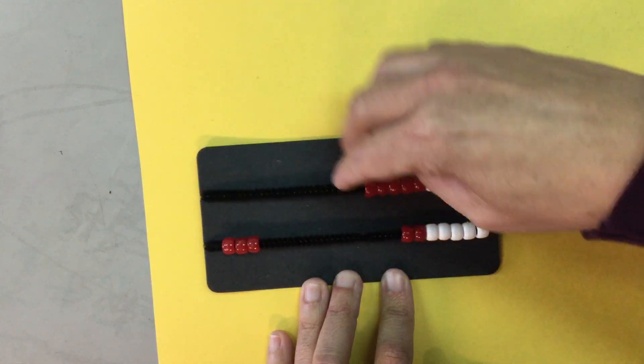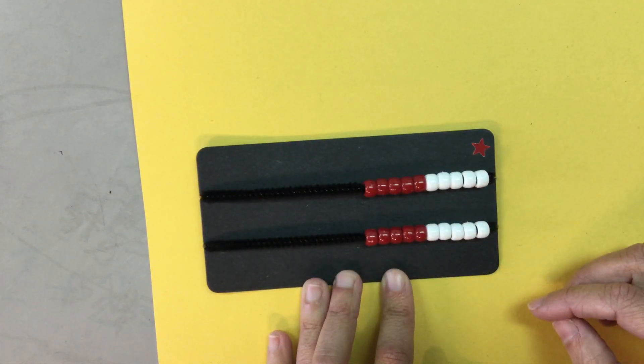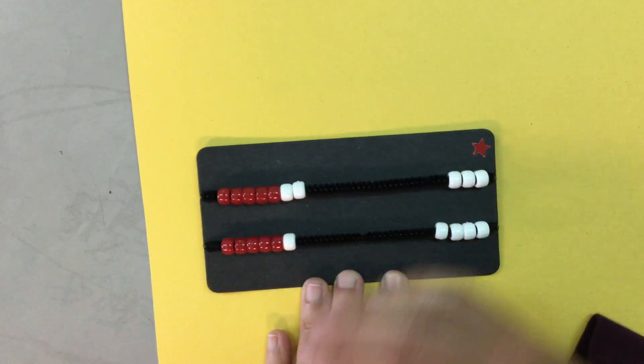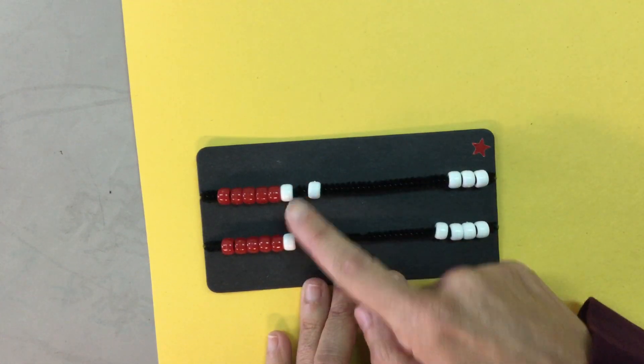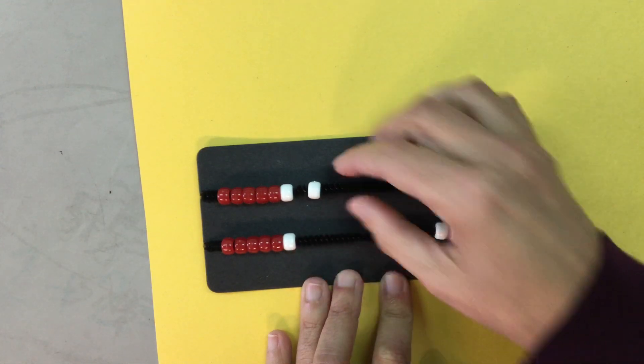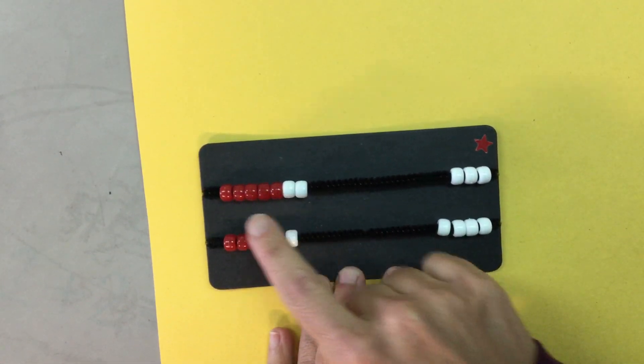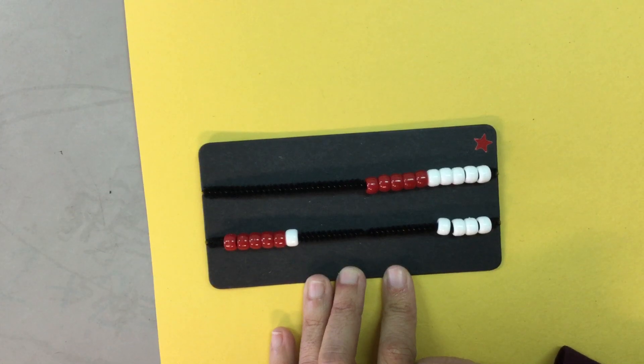I could also build 13 in a different way. I could build 13 as 7 on the top and 6 on the bottom. There's using that double fact again, 6 plus 6 is 12 and one more is 13. And then it's very easy for me to push my seven beads back because there's seven and I can quickly see that there are six left.